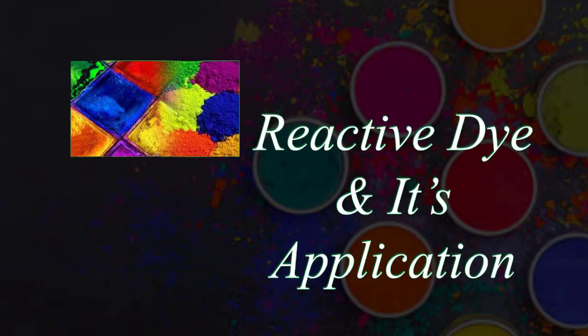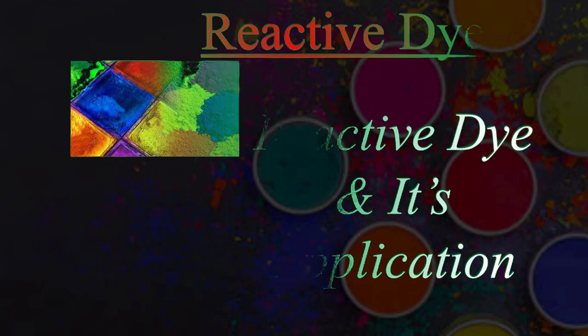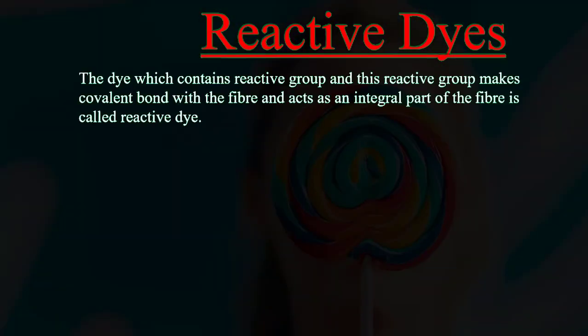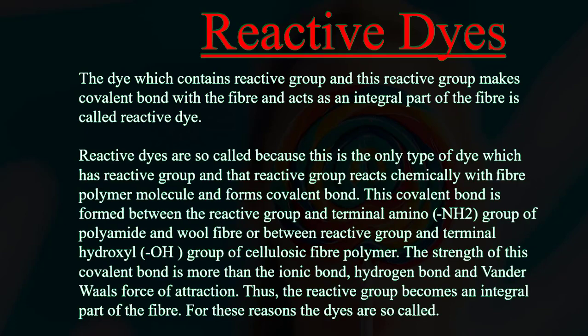Reactive dye and its application. Reactive dye is the dye which contains a reactive group, and this reactive group makes a covalent bond with the fiber and acts as an integral part of the fiber. Reactive dyes are so called because this is the only type of dye which has a reactive group that reacts chemically with the fiber polymer molecule and forms a covalent bond.